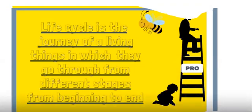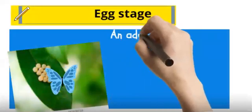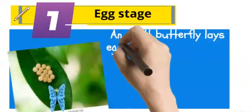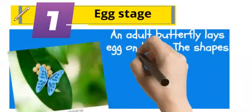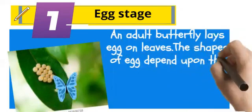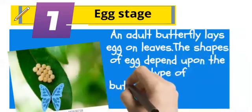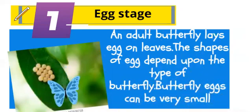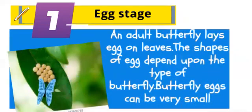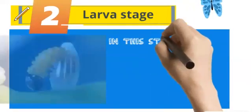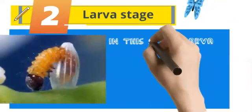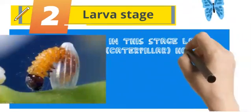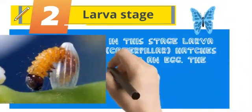First stage: egg stage. An adult butterfly lays eggs on leaves. The shape of the egg depends upon the type of butterfly. Butterfly eggs can be very small. Second stage: larva stage. In this stage, the larva caterpillar hatches from an egg.